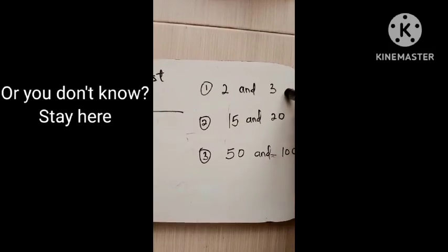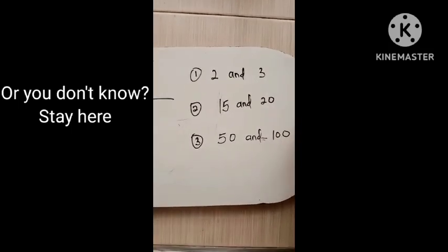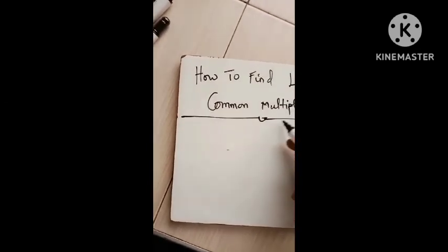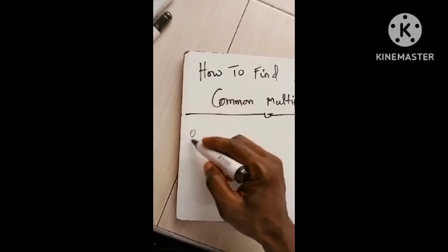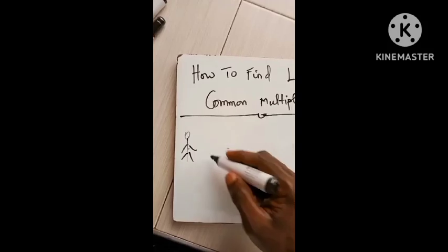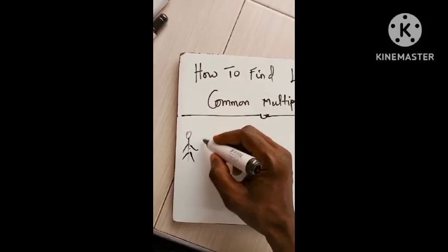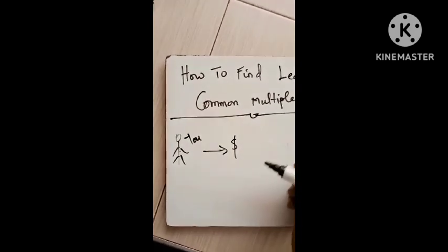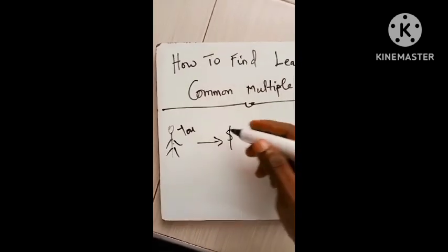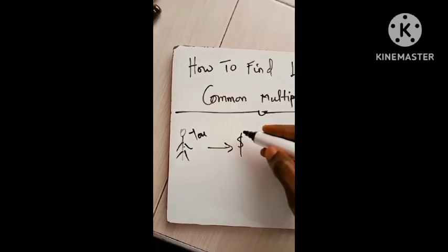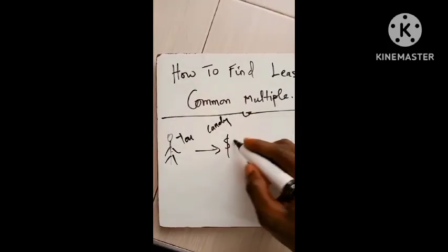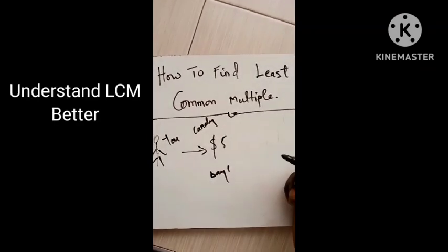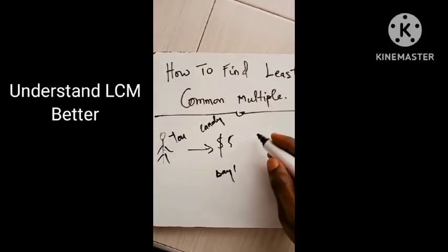The most common method that we know is by listing the multiples. But what does it even mean to find the least common multiple? I have a short video on the channel if you haven't checked that. Let's say you purchase a candy that costs five dollars — so that is for day one.